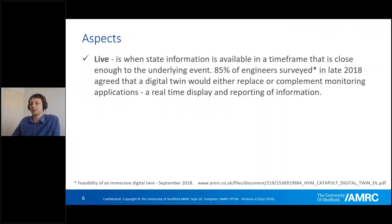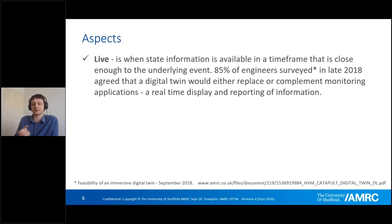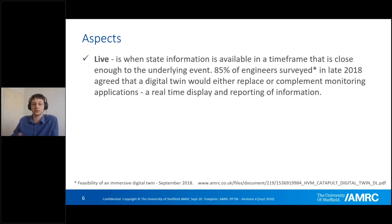Starting off with 'live' — this is probably one of the most contentious parts around a Digital Twin. We've ultimately defined it as: as long as you have state information available in a time frame close enough to the underlying event, it's considered live. It's the same premise as having football scores. You don't need to watch every single second at 30 hertz through a TV screen — you just need an update whenever somebody scores. You don't have to have a constant real-time stream; you just need the information as you need it.